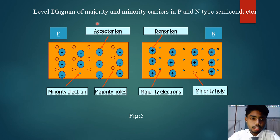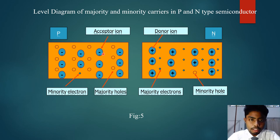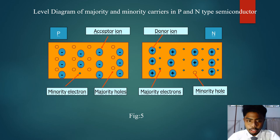In the label diagram of majority and minority carriers: in P-type semiconductors, the minority carriers are electrons and the majority carriers are holes. The negative charge ion in P-type semiconductors is called the acceptor ion. In N-type semiconductors, the majority carriers are electrons and the minority carriers are holes, and the positive charge ion is called the donor ion.